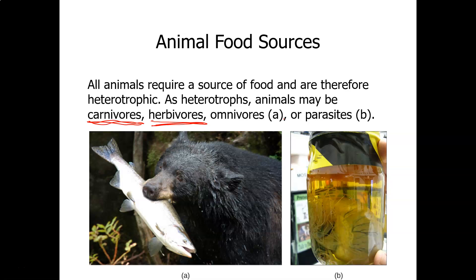Animals may be carnivores, which means their food source is other animals. A lot of our apex predators, like lions and tigers and panthers, are carnivores. Sharks are another example.